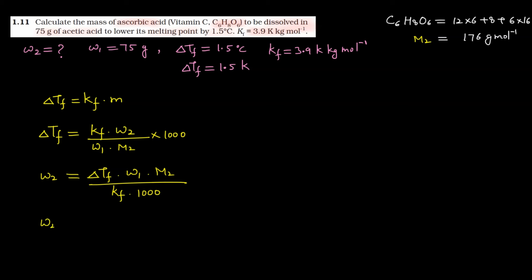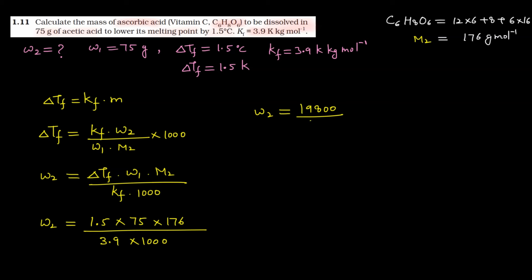Values put करेंगे: W2 equals to 1.5 into W1 = 75 into M2 = 176, divided by Kf = 3.9 into 1000। Calculate करेंगे: W2 equals to 19800 divided by 3900। 20 से 20 cancel करने पर, यह आपके पास आ जाएगा 5.0796 grams। तो W2 equals to 5.08 grams — this is the answer of this question।